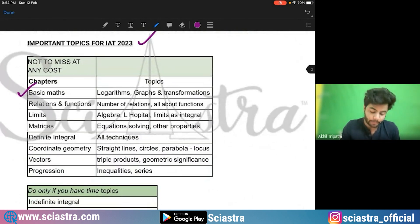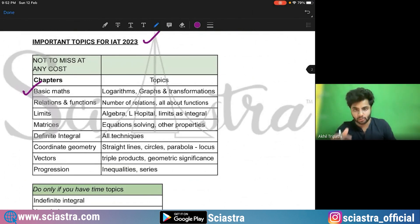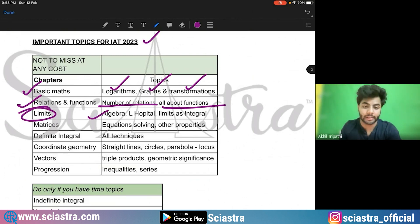First is basic math. This is for IAT. For NEST also, I will tell. So first is the basic math chapter, logarithms, graphs, and transformations. Then comes relations and functions. So questions from number of relations and everything about function is important. Coming to limits, so algebra of limits, L'Hospital rule, limits as integral are very important topics.